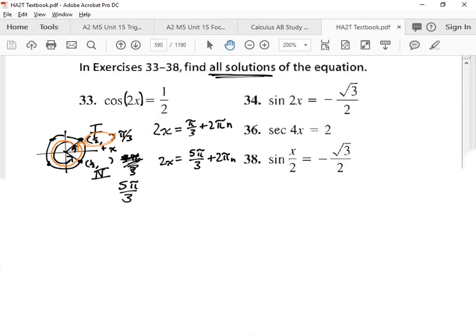But we did not get X alone yet. We must divide by 2 or multiply by one-half to both sides. And then you get your answer. Pi over 6 plus. What's one-half times 2?